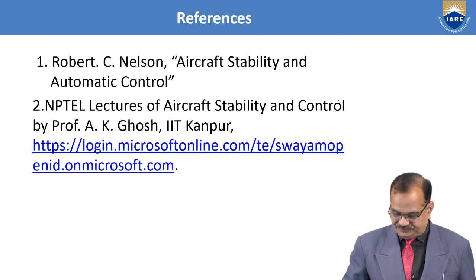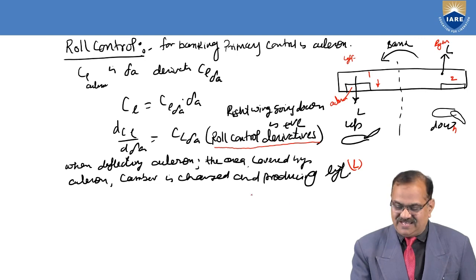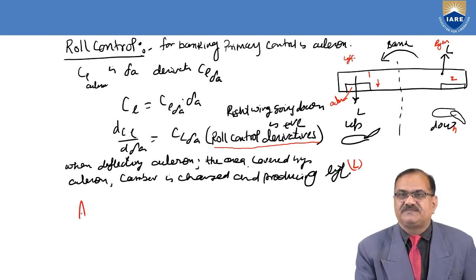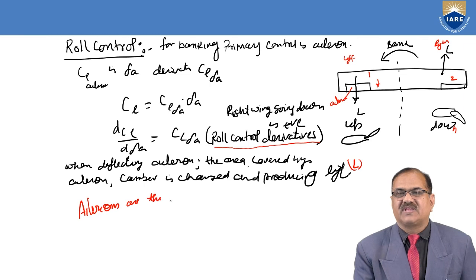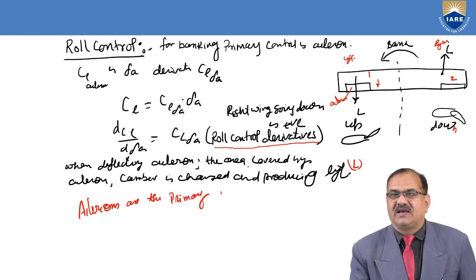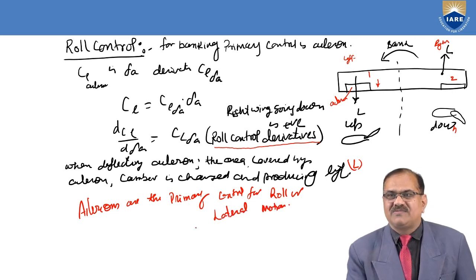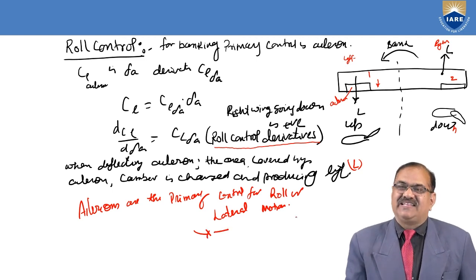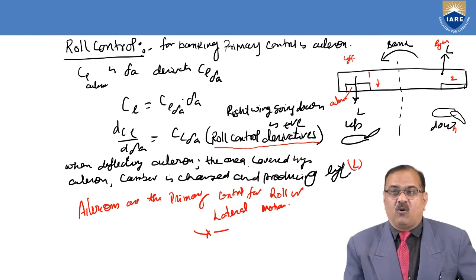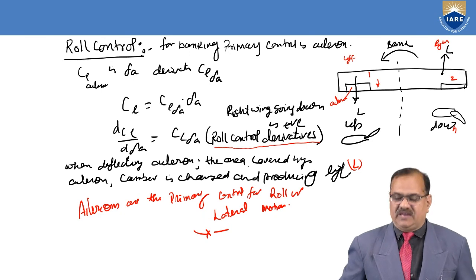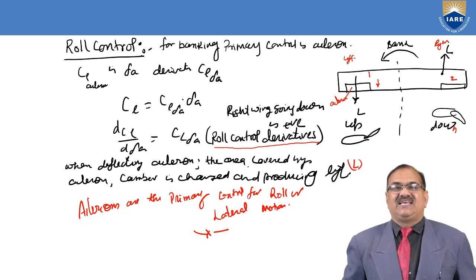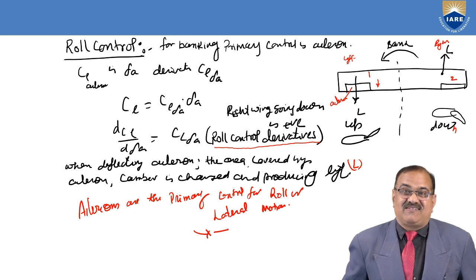So I am at the last part. You can see that ailerons are the primary control for roll or lateral motion. I am just ending this class here, and we will see further topics in the next class. Hope you have understood the rolling static stability of the aircraft, and how CL beta is affecting it, how the vertical tail is used for rolling or lateral stability, and the wing position — higher winger is good for lateral stability but lower wingers are not good.